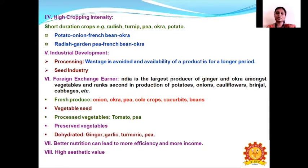Another important factor is industrial development, as vegetables can be processed to avoid waste and ensure long-term availability of products — for example, preparing sauces, jams, and other products from vegetables. There is also an important seed industry for quality seed production of vegetable crops. In terms of foreign exchange, India is the largest producer of ginger and okra and ranks second in production of potatoes, onions, cauliflower, and cabbages.